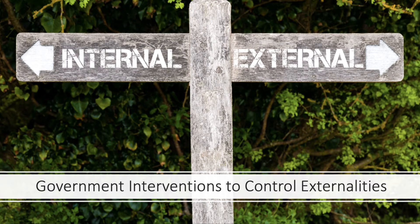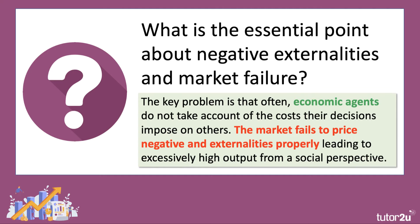Welcome to the next video in our series of revision videos looking at the economics of externalities and market failure. In the last video we went through some analysis diagrams showing how you can visualise diagrammatically negative externalities from production and also the social welfare loss. Let's spend a few minutes thinking about different types of intervention from government, different types of policy that might be used to control externalities and also crucially to reduce the market failure.